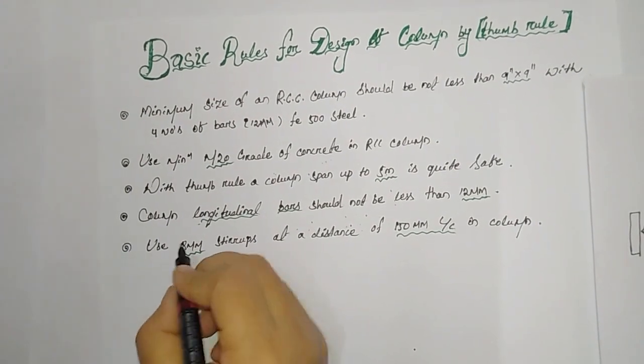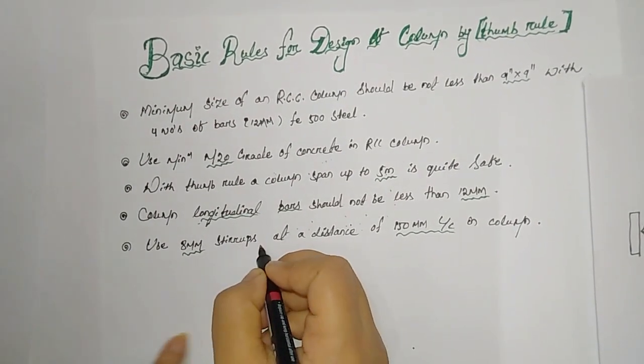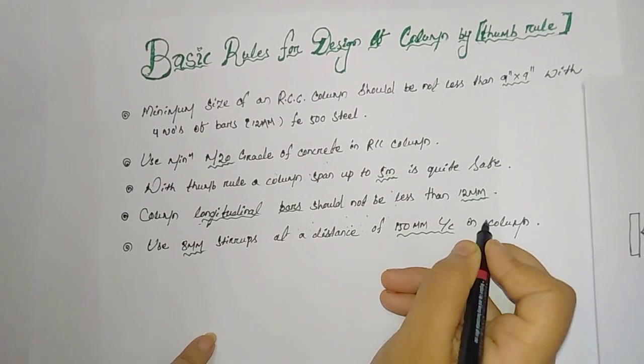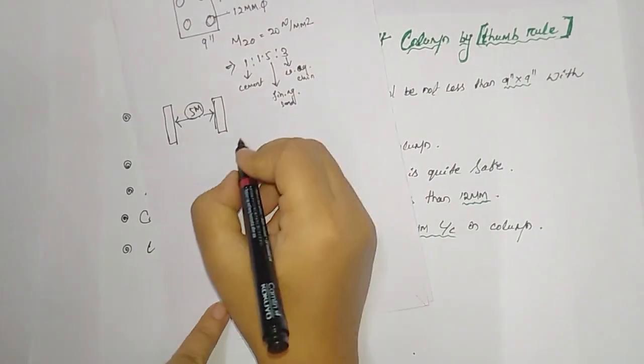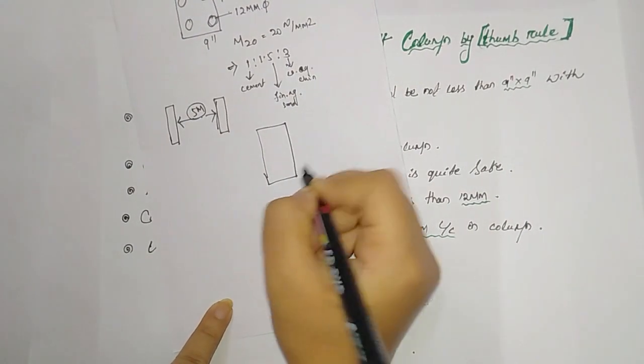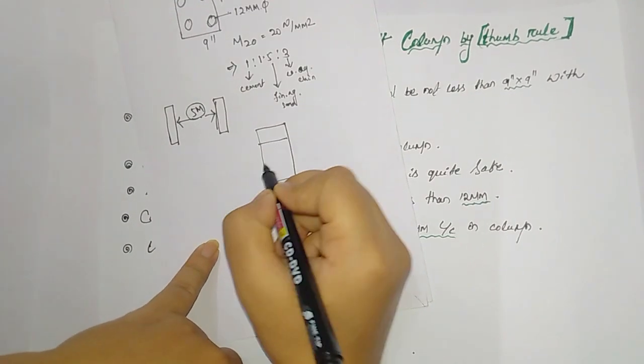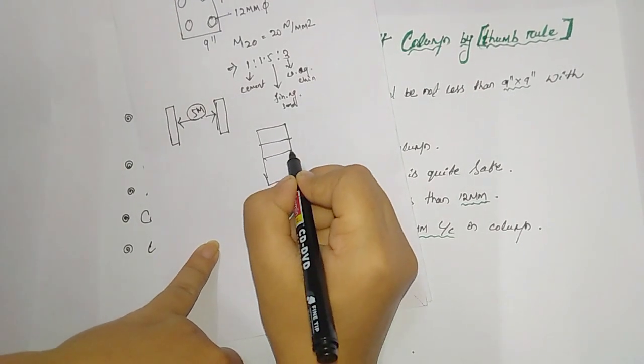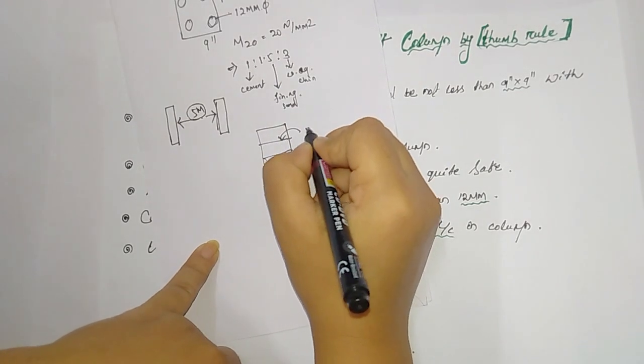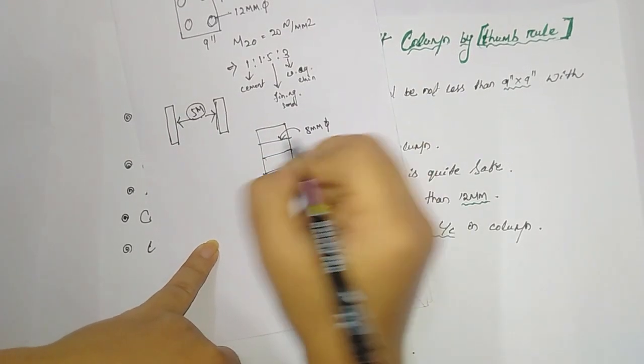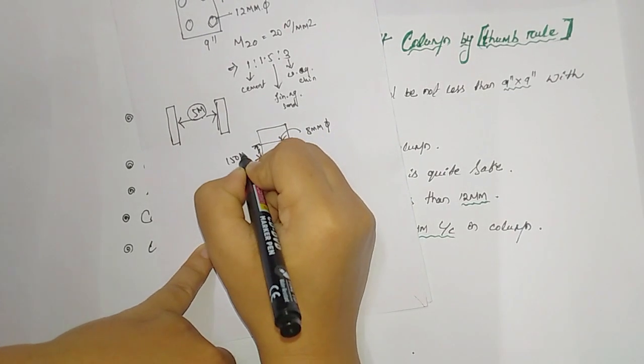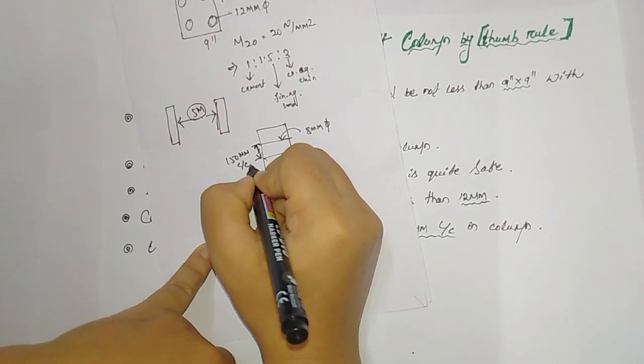And the last one: use 8mm stirrups at a distance of 150mm center to center in column. For example, if this is the column, these are the stirrups, and each stirrup is of 8mm diameter, and the spacing between two stirrups should be 150mm center to center.